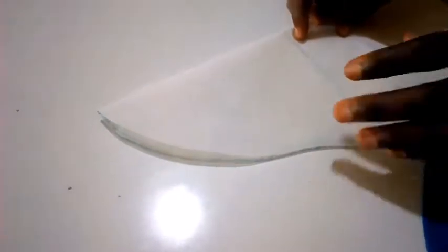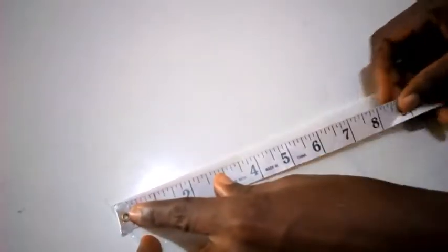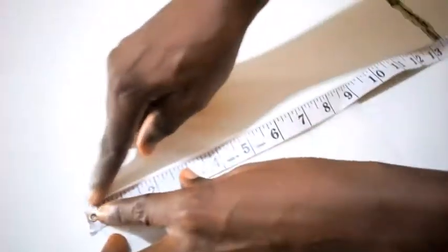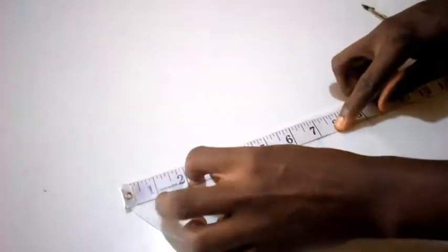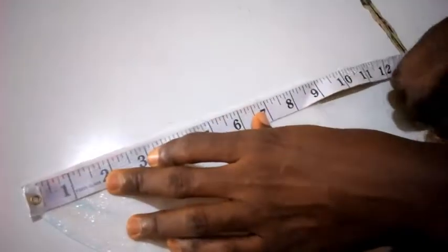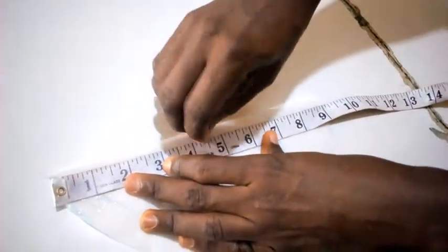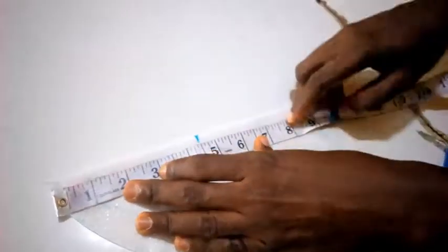Now I have 9 inches here for the length. Nine inches divided by 2 gives me 4.5. I'm going to mark 4.5 here. Now I'm going to turn it this way.